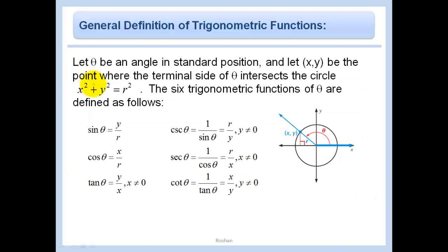So now we're going to define sine, cosine, tangent, cosecant, secant, and cotangent in general. On any circle with radius r, we can define the six trigonometric functions.